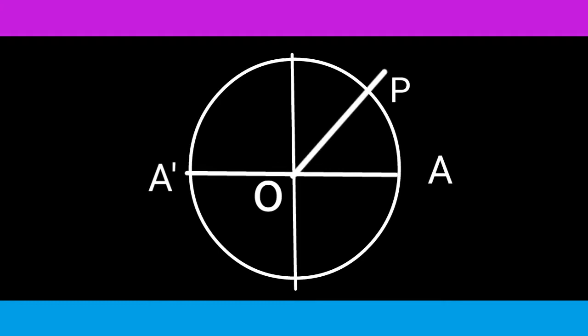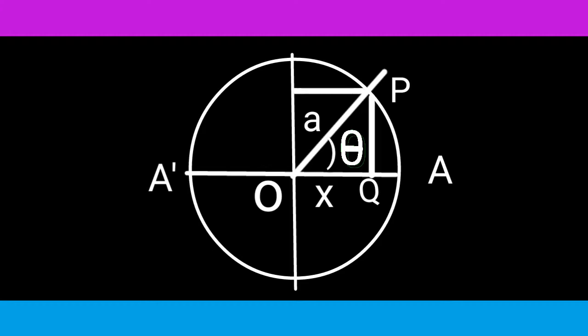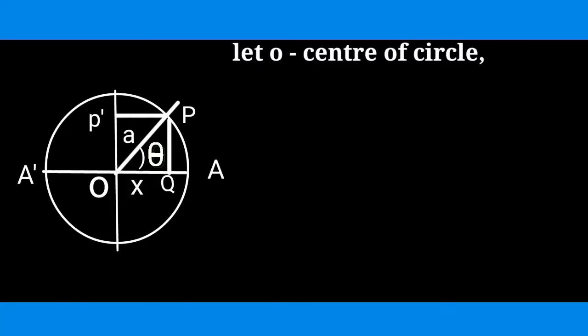Here we consider P is the position of the particle at time T. The length is A, that is the radius. The angle AOP is theta. The projection of P on AA' is Q. The distance OQ is X. A' is similar to Q.